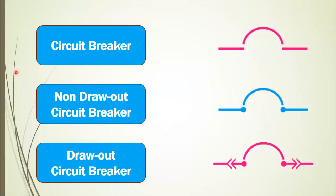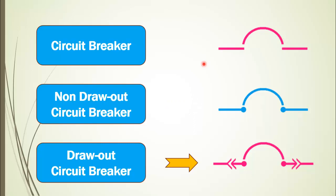Let's start with the circuit breaker. This is a generic circuit breaker. Next is the non-drawout circuit breaker, then the drawout circuit breaker. These are differentiated by the arrows on the straight lines.